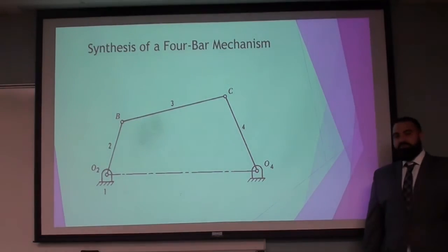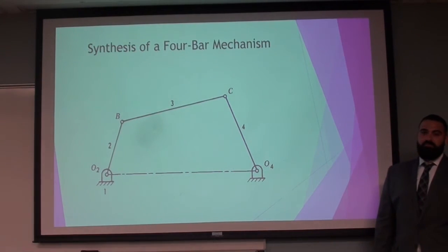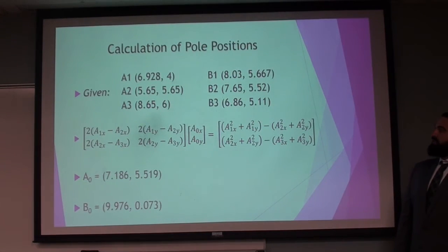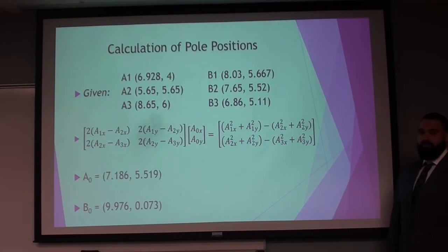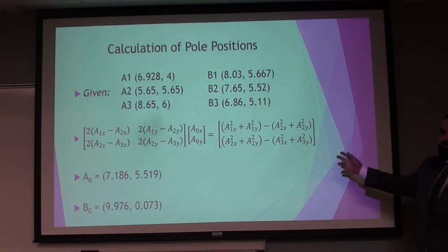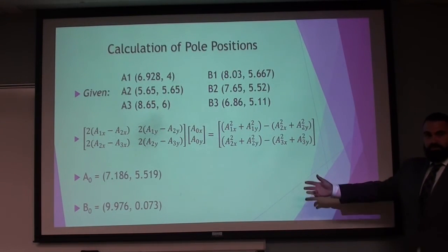In this part of the project, we're going to be synthesizing the four bar mechanism. So, to begin, we're being given three points, where the end points of the coupler link need to pass through. Plugging those values into this equation will yield us pole positions.